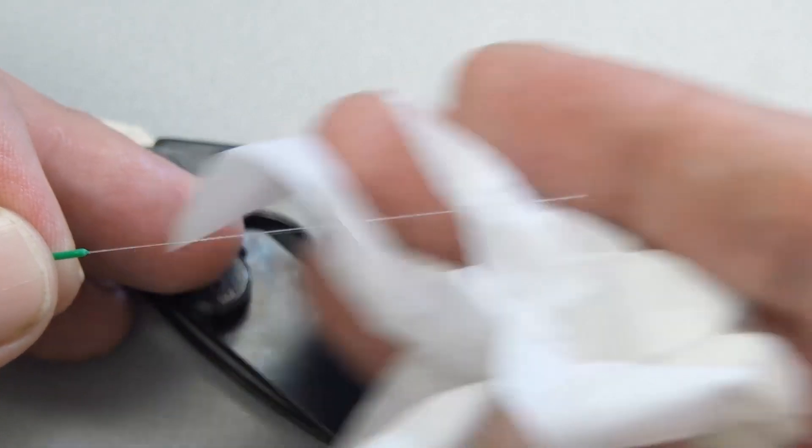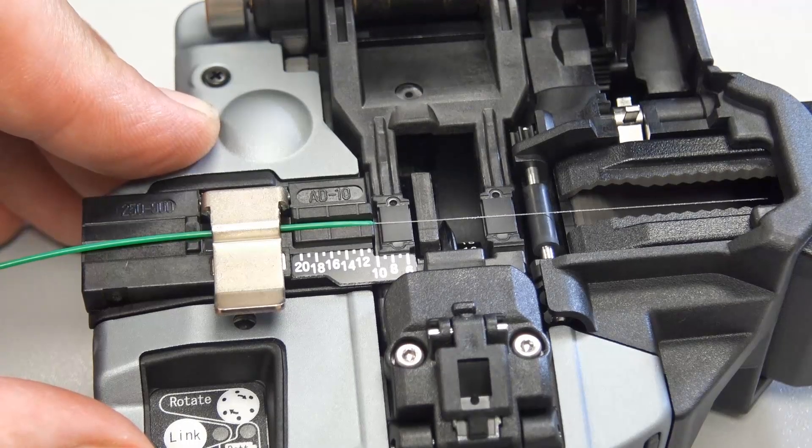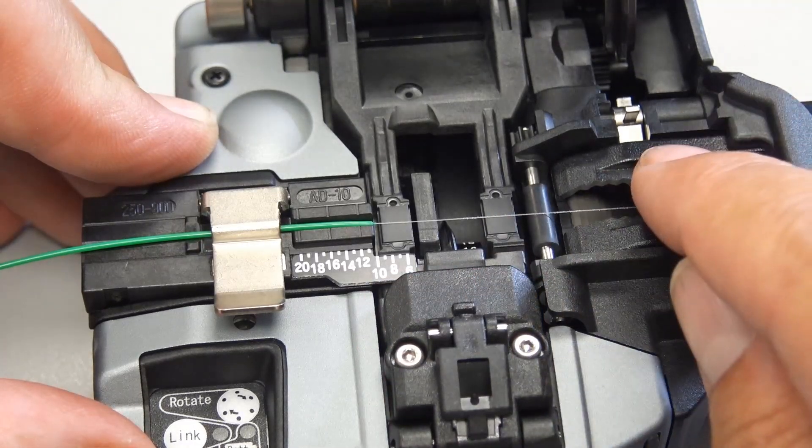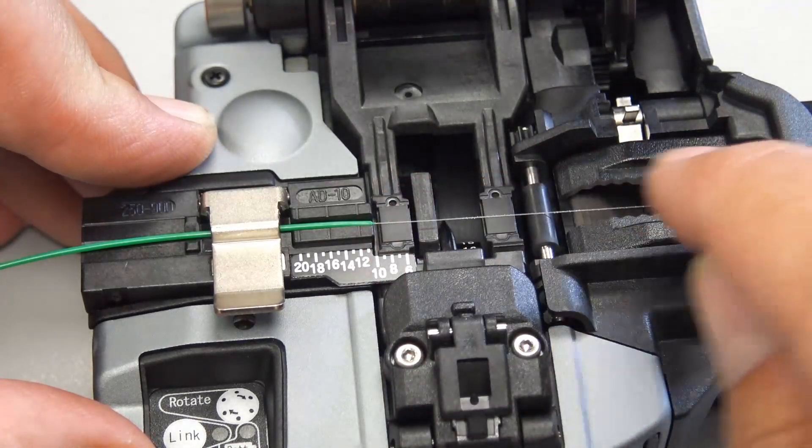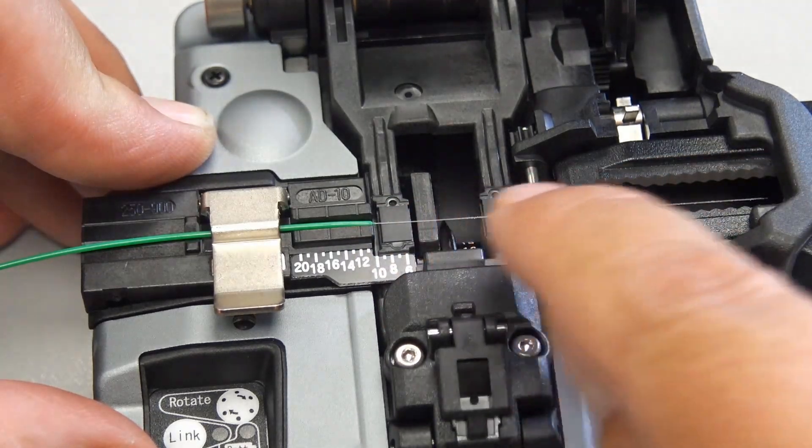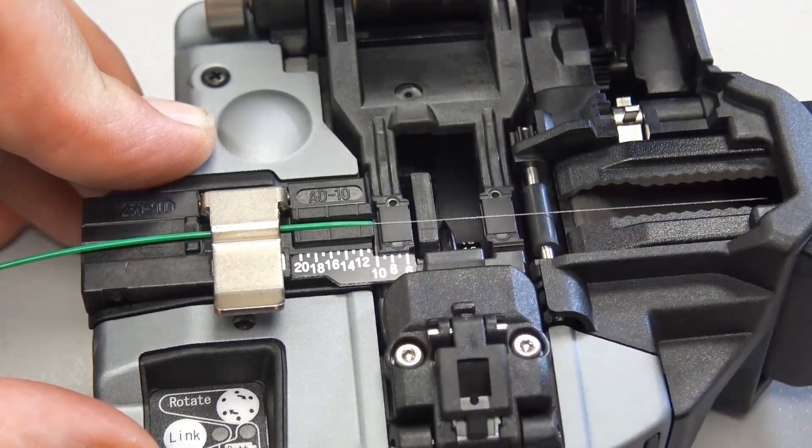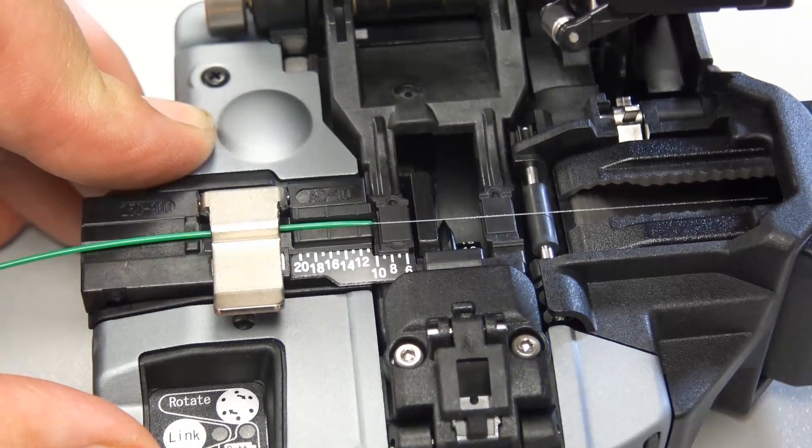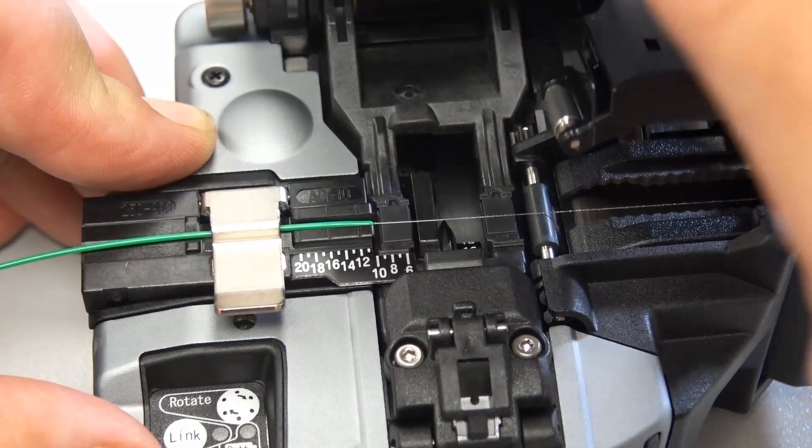We're going to cleave it at the 10 and a half mark. One thing I do want to mention: if you don't strip it properly, you might want to go over it a second time just in case there's acrylic material on there. If it's not taken off properly, when you go to cleave, you're going to think there's something wrong with your cleaver, but it's that material.